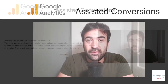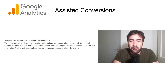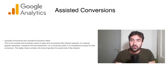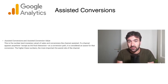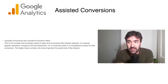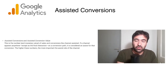Let's look at the definition first. According to Google, assisted conversions and assisted conversion value is the number and monetary value of sales and conversions that a certain channel assisted. If a channel, traffic source, device type, or landing page appeared anywhere except as the final interaction of the conversion funnel on a specific conversion path, it is considered an assist for that conversion. The higher these numbers, the more important the assist role of that channel.